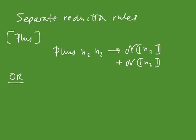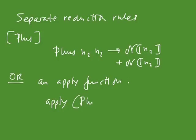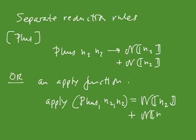Or we could do something else, which I think is nicer. We could have an apply function that returns the result of applying a constant to its arguments. We'd have defining clauses — for instance, a clause that says that apply plus to N1 and N2 gives the number corresponding to N1 plus the number corresponding to N2. This is the approach I'll take in the rest of this presentation.